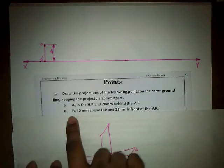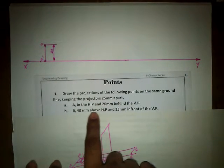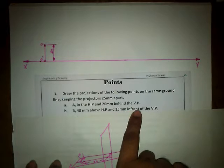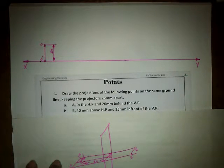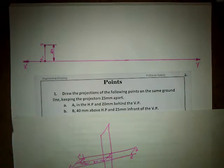As per the second question, we have point B which is 40mm above the HP and 25mm in front of VP. So 40mm above HP and 25mm in front of VP, which is nothing but above and in front, means it is going to be present in the first quadrant.